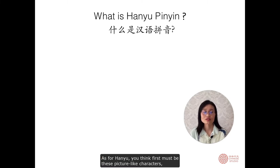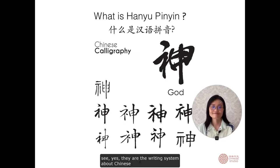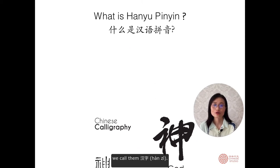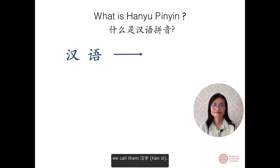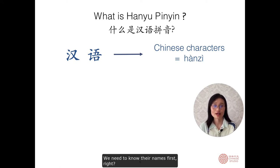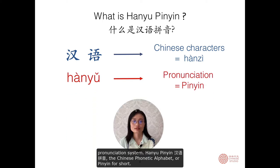When you think of Hanyu, you must first think of the picture-like characters. Yes, they are the writing system of Chinese. We call them 汉字. So how do we know them? We need to know their names first, so we learn Hanyu Pinyin first — the pronunciation system. Hanyu Pinyin, the Chinese phonetic alphabet, or pinyin for short.